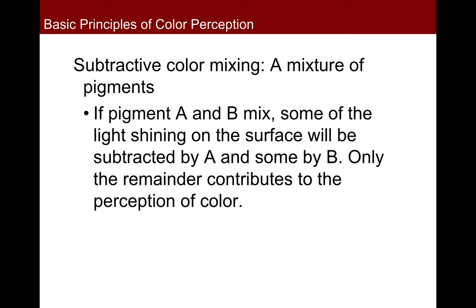Additive color mixing is what you do with lights, but subtractive color mixing is the kind of mixing you do with paints — probably the most common kind you're familiar with. Under the rules of subtractive color mixing, blue and yellow make green, which is different from additive mixing where blue and yellow make white. In subtractive color mixing, blue and yellow make green.